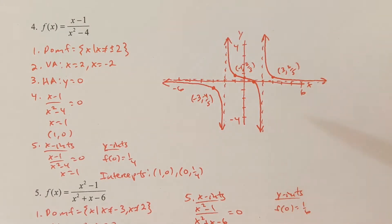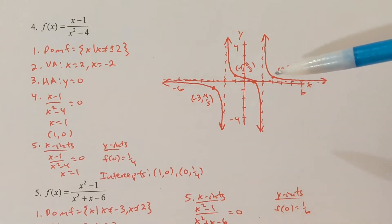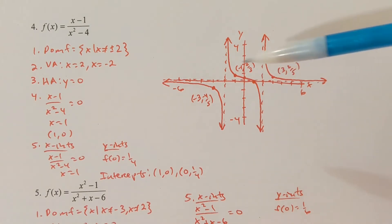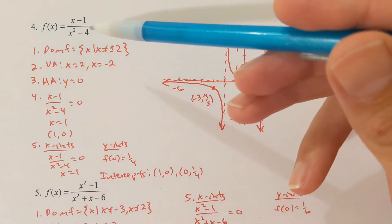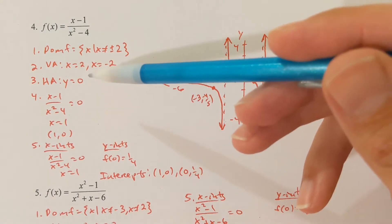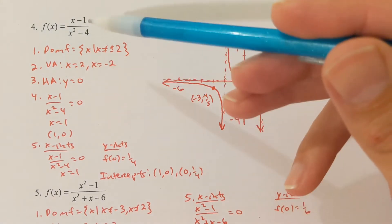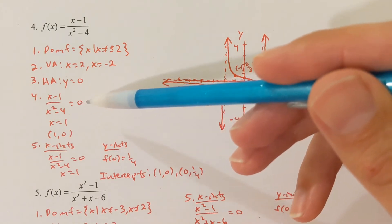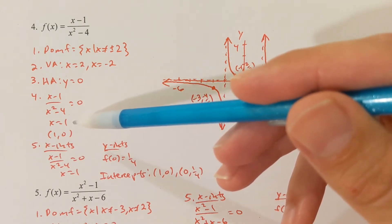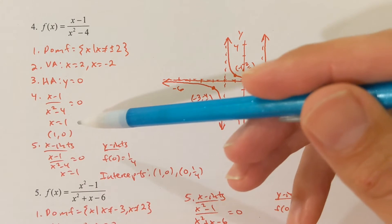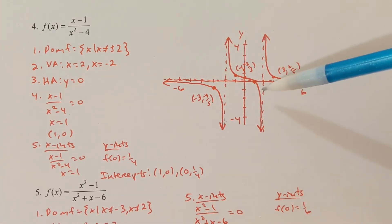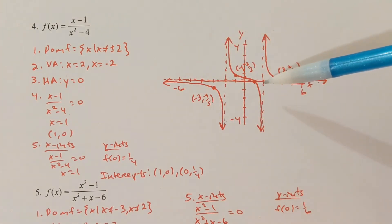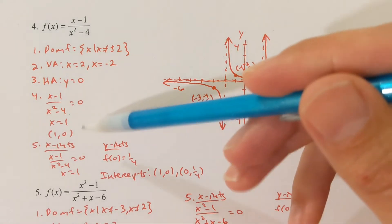Step 4 is to determine if the asymptote crosses the graph at all. You set the function equal to the asymptote. x minus 1 divided by x squared minus 4 equals 0 means that x is equal to 1. So yes, we will cross the asymptote one time — it'll happen at the point (1, 0).